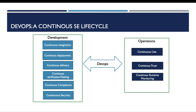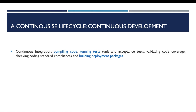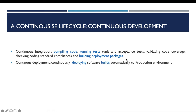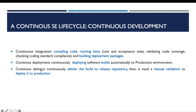Starting with the continuous activities of the development phase: continuous integration includes compiling code, running tests, and building deployment packages. Continuous deployment is about continuously deploying software builds to the production environment, and this kind of deployment is performed automatically. Continuous delivery is about delivering the build to the release repository; if we want to deploy the build to the production environment, we need a manual intervention or manual validation.